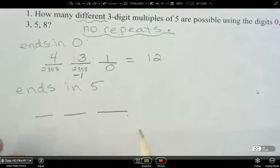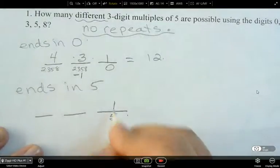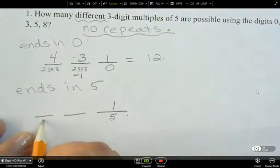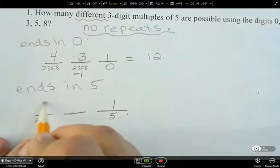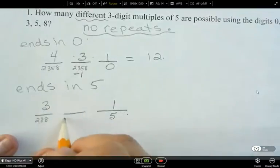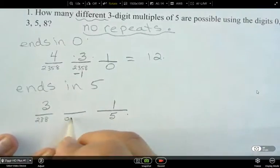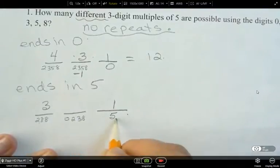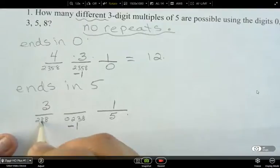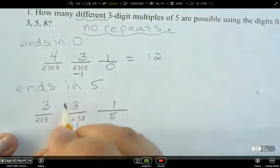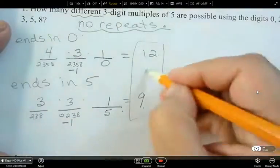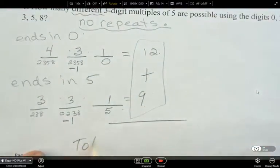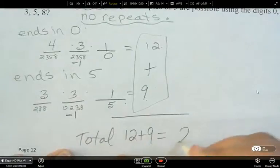And then if I end in 5, so let's say we're ending in 5, there's only one way to fill that spot. And what are my options left here? So I can either use a 2, 3, or 8. I can't use a 0 in this first spot because then it's not a three-digit number. So there's three ways to fill that spot. And then for here, I can use a 0. Now I can use a 0, 2, 3, 8, but no 5 because I've used the 5 here, and minus 1 because I've used one of them in the first spot. So there's three options here. So that equals 9. Now, we need to add these two together. So our total is 12 plus 9, which is 21.